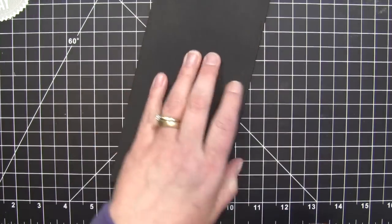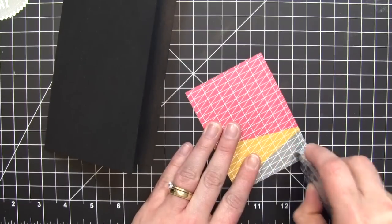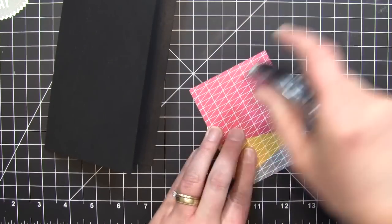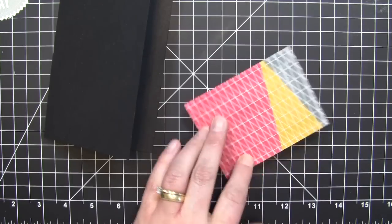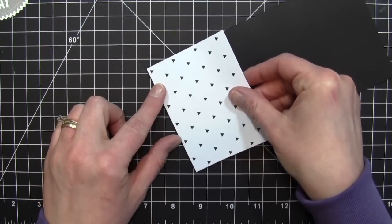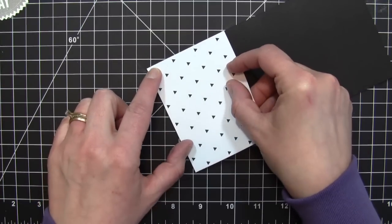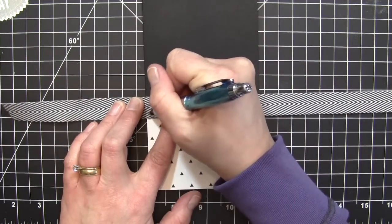I really like this size card. You can always make an envelope for this using your envelope punch board. I'm using pattern paper from the Kaleidoscope designer series paper, cut down to four inches by three inches. I'm adding some adhesive to the back and adhering that down to the bottom half of my card.